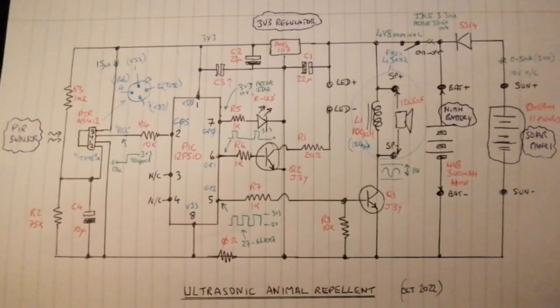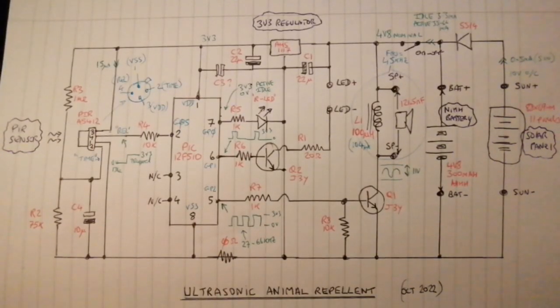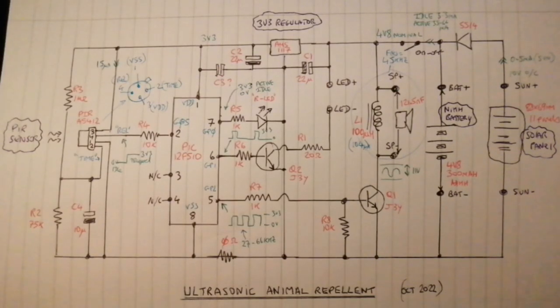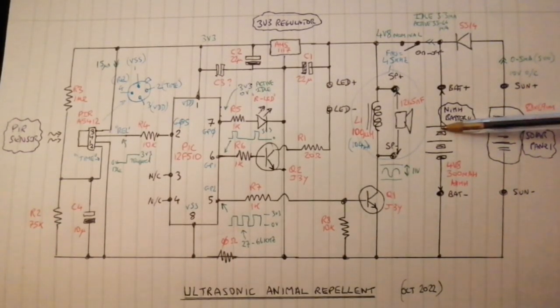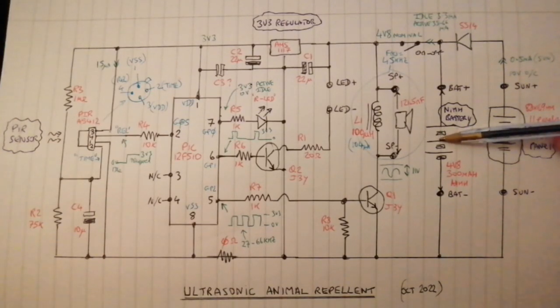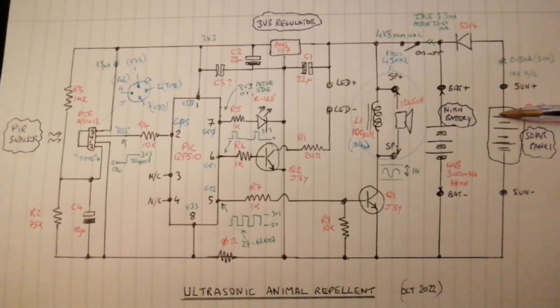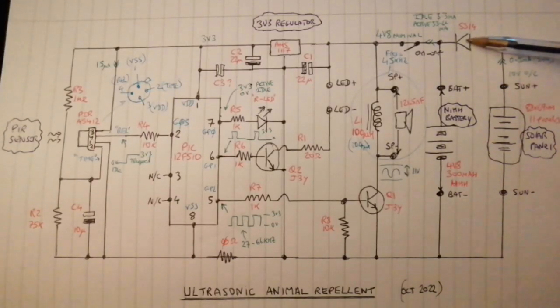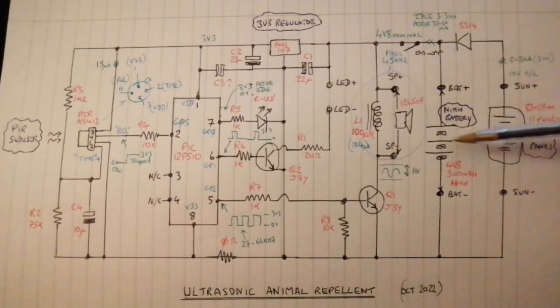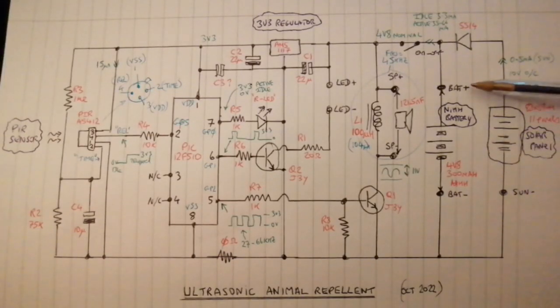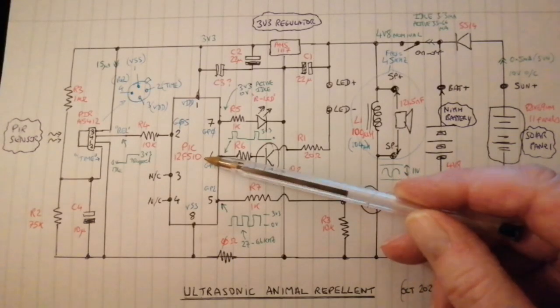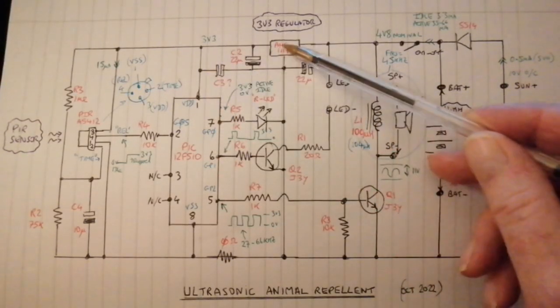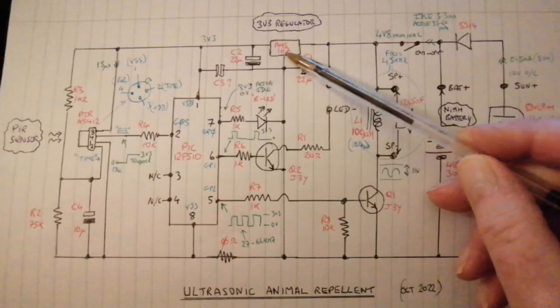First a quick overview of the circuit, then I'll have a look in more detail. The unit is powered from a 4.8 volt 300 milliampere nickel metal hydride battery, which is charged from the solar panel via a Schottky diode. There's no overcharge or over-discharge protection. The heart of the unit is an 8 bit PIC which is powered by 3.3 volts from this regulator.